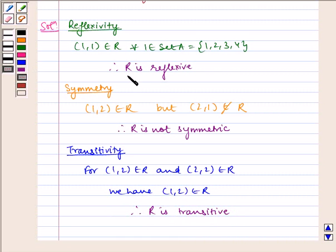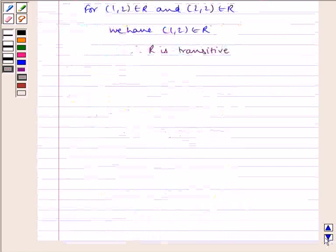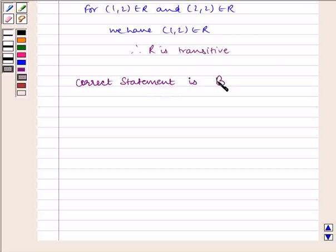Therefore R is transitive. We can see that R is reflexive, R is not symmetric, and R is transitive. Therefore it satisfies statement B: R is reflexive and transitive but not symmetric. Therefore our answer is, the correct statement is B.